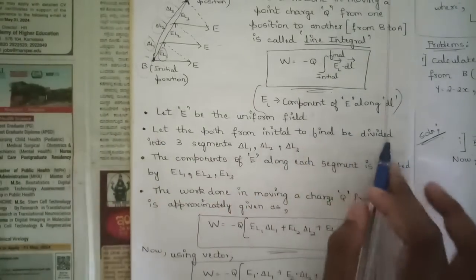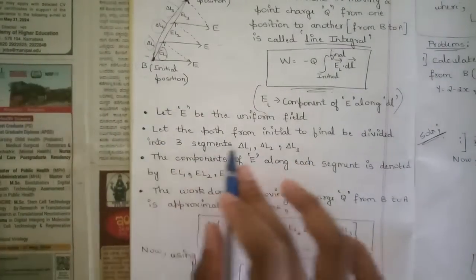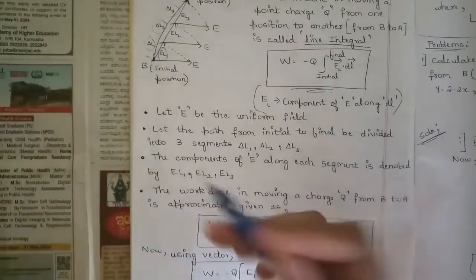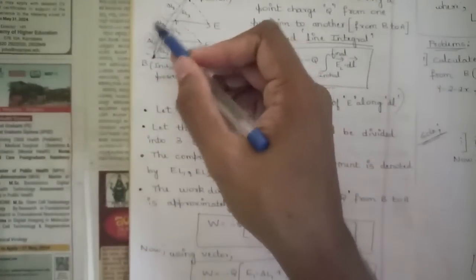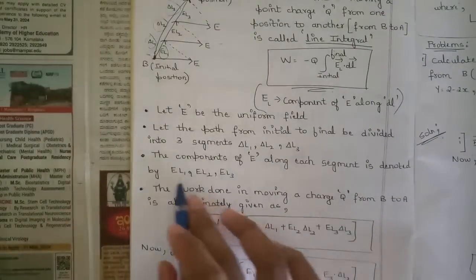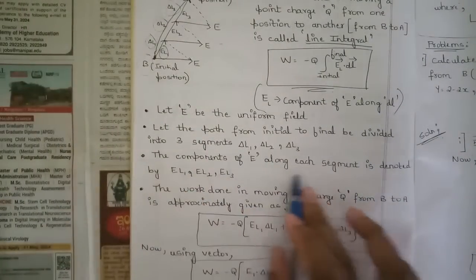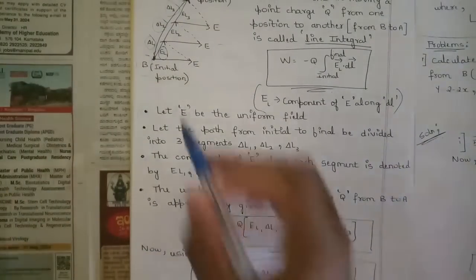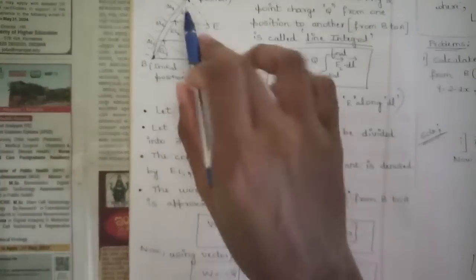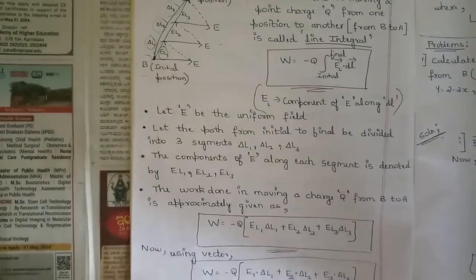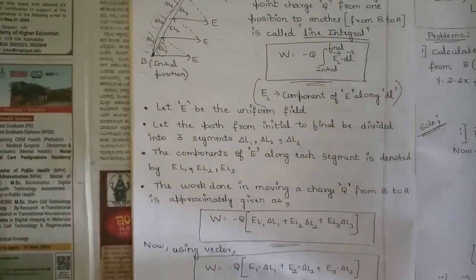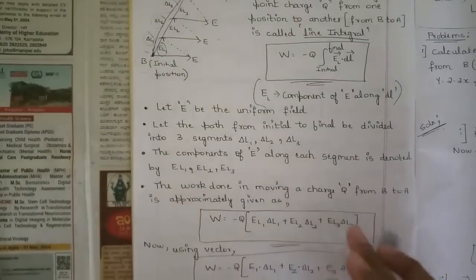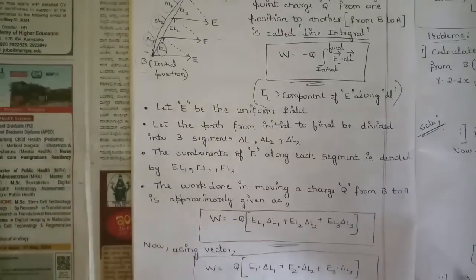Now let E be the uniform electric field. The path from initial to final position is divided into three segments: Delta l1, Delta l2, and Delta l3. The components of E along each segment are denoted as E_L1, E_L2, and E_L3 respectively. The work done in moving a charge from B to A is approximately given by the following formula.